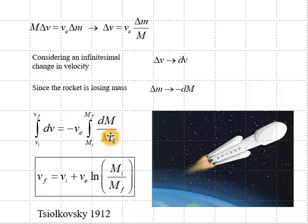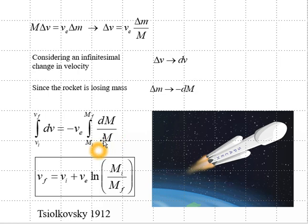Having separated variables, we can integrate. On the left we have the integral of dV between the initial and final velocities of the rocket. On the right we have dM over M, integrated between the initial and final masses of the rocket, times the exhaust speed. Note that if the exhaust speed is not constant, it cannot come outside of the integral.